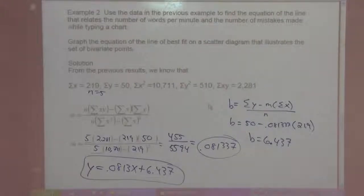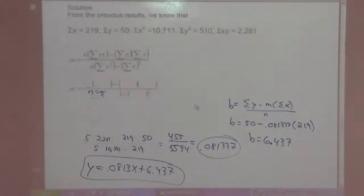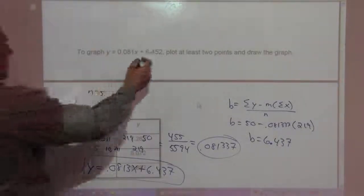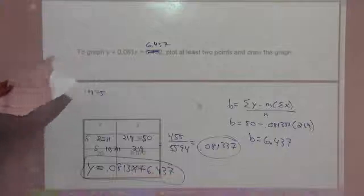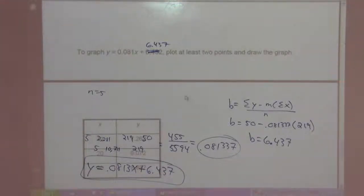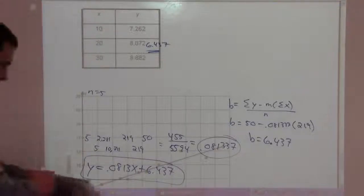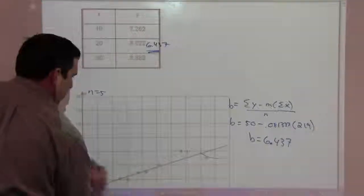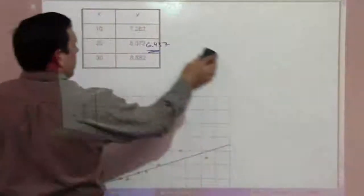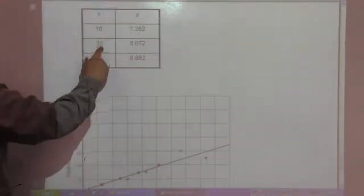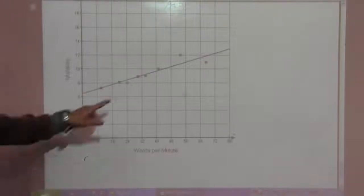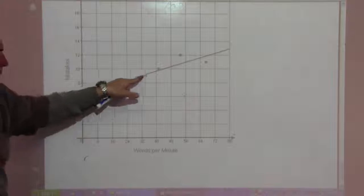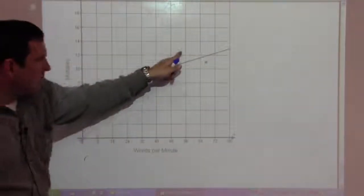Feel free to pause if you need more time to write that down. To graph y equals 0.0813x plus 6.437, we plug in three X values — 10, 20, 30 — to get points from the equation and plot them. On this graph, the green points are the actual data points and the red points are from the equation. This is the line of best fit alongside the actual data points.